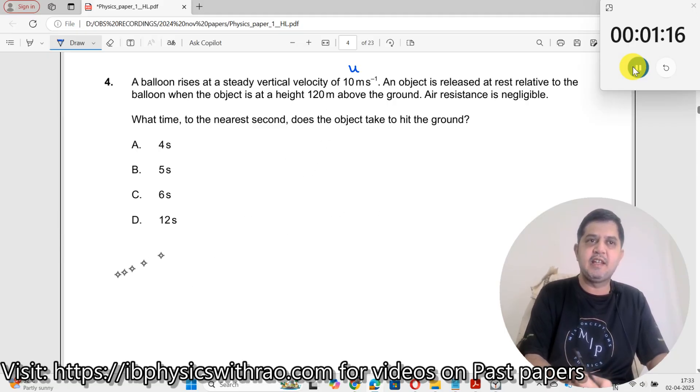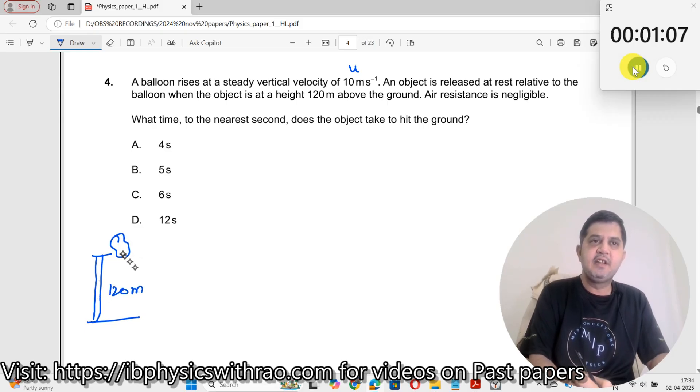Therefore, let me write down the diagram. I have the diagram like this. The balloon is somewhere over here, this is the ground, and the distance between them is 120 meters. And then an object is being released.